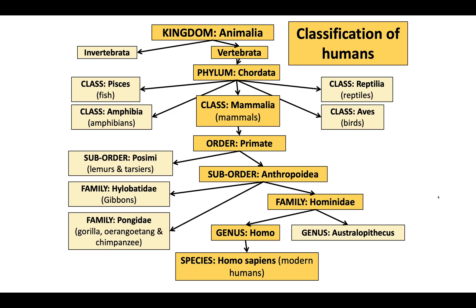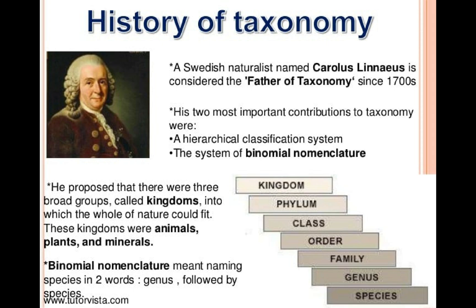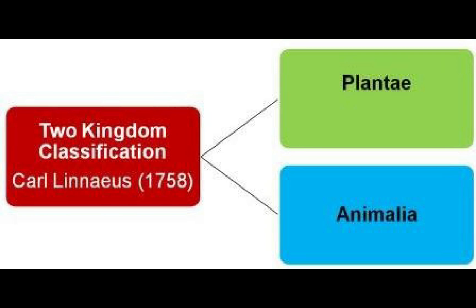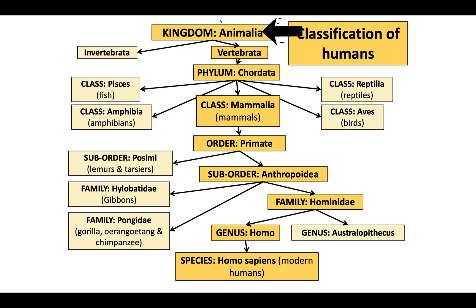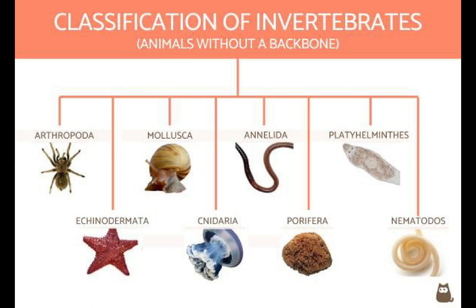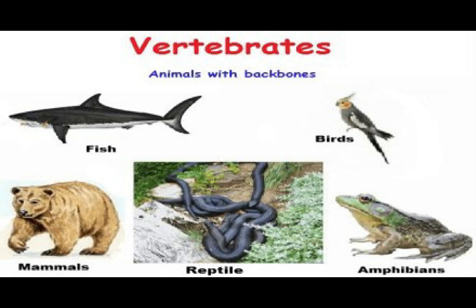What you see in front of you is a scientific classification, which you have studied in grade 11. You have learnt about the father of taxonomy, Carolus Linnaeus, and his system of classification. You were introduced to the different kingdoms, such as Animalia and Plantae. Humans belong to the kingdom Animalia — we are not plants. The Animalia kingdom is divided into two groups: the invertebrates, which do not have a backbone or vertebral column, and the vertebrates, which do have a vertebral column.